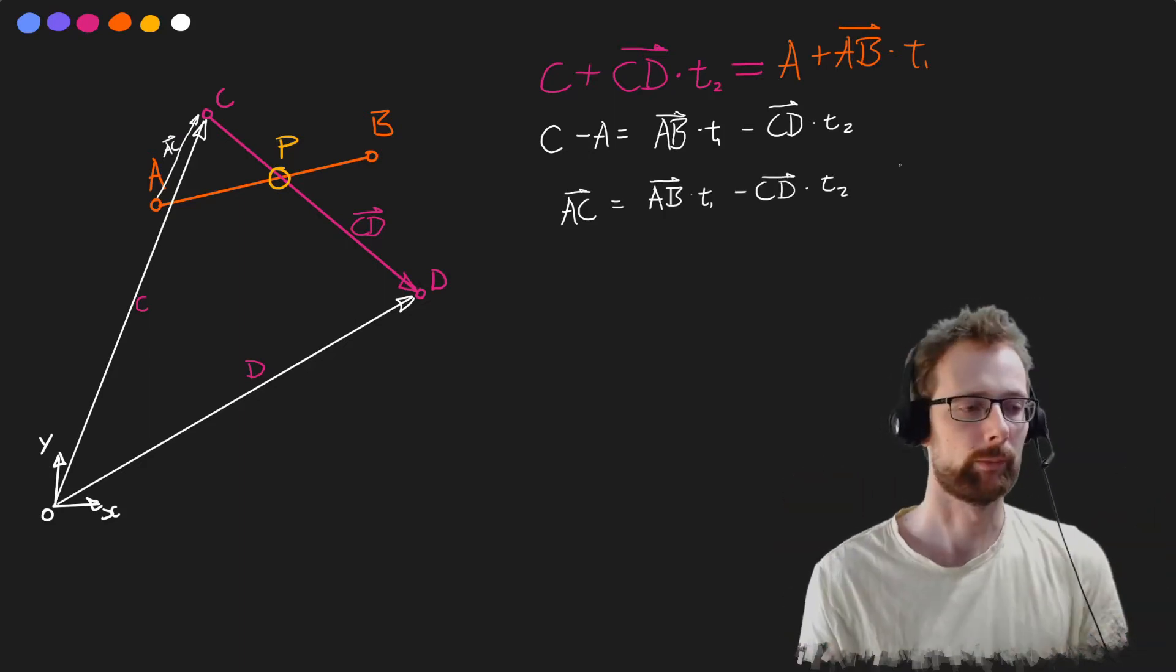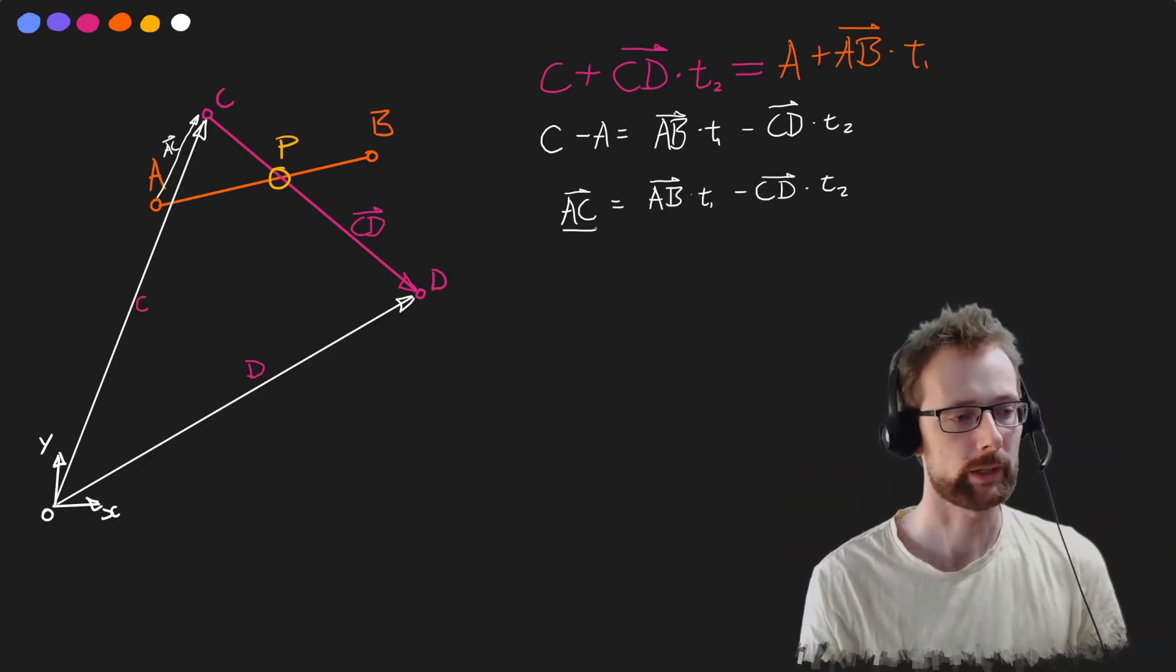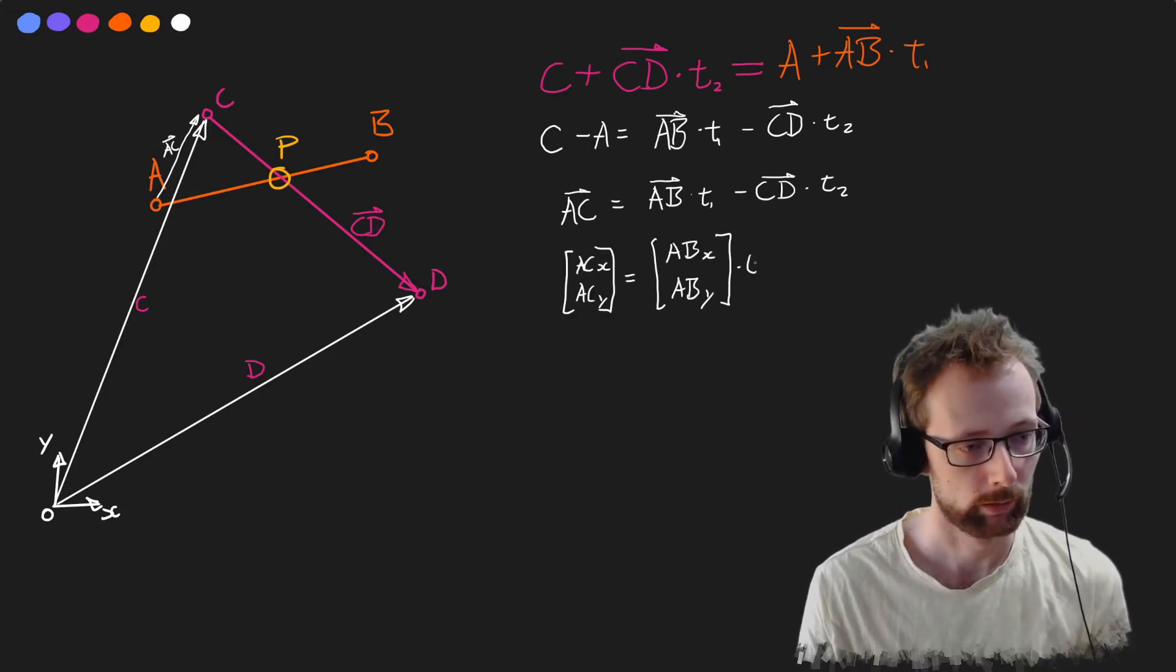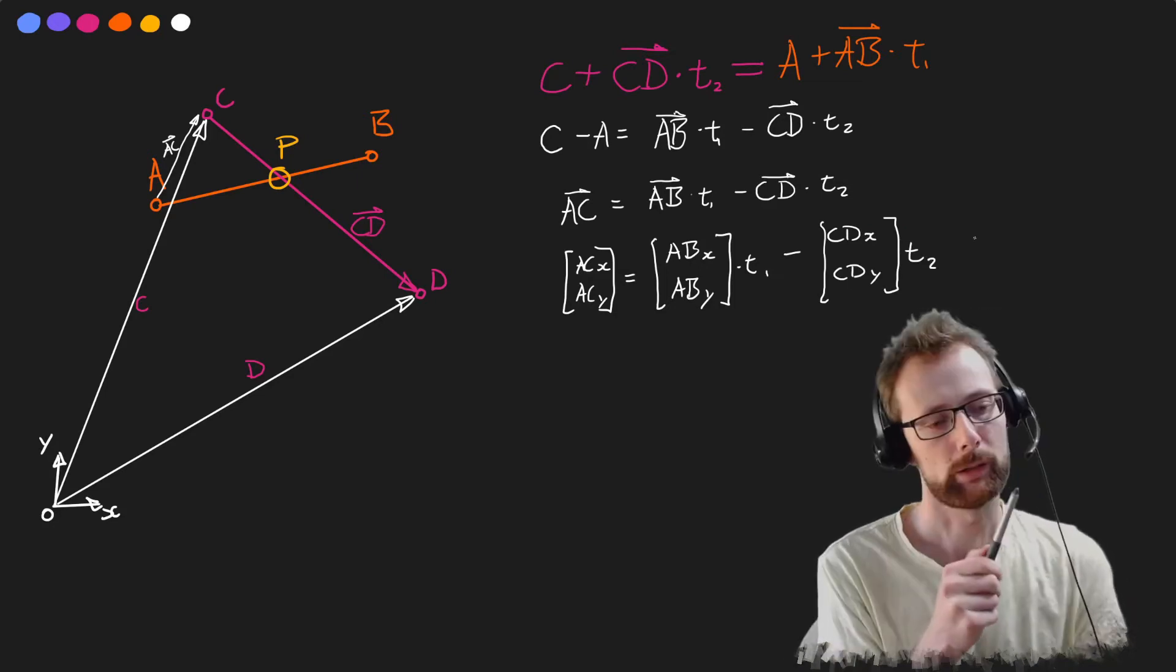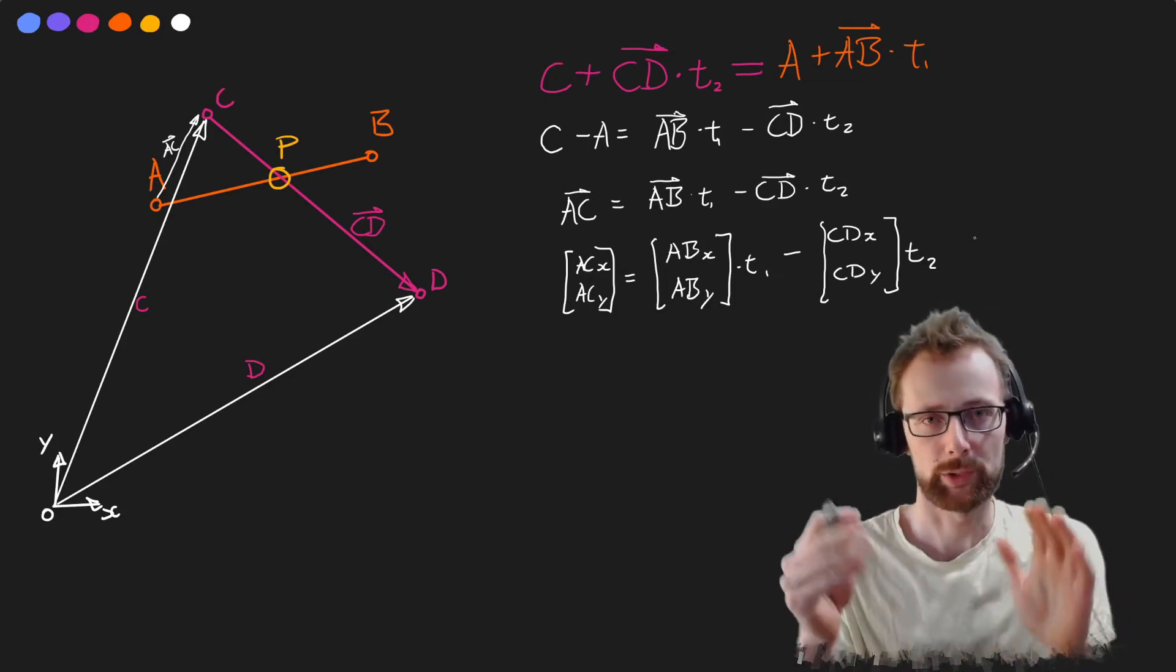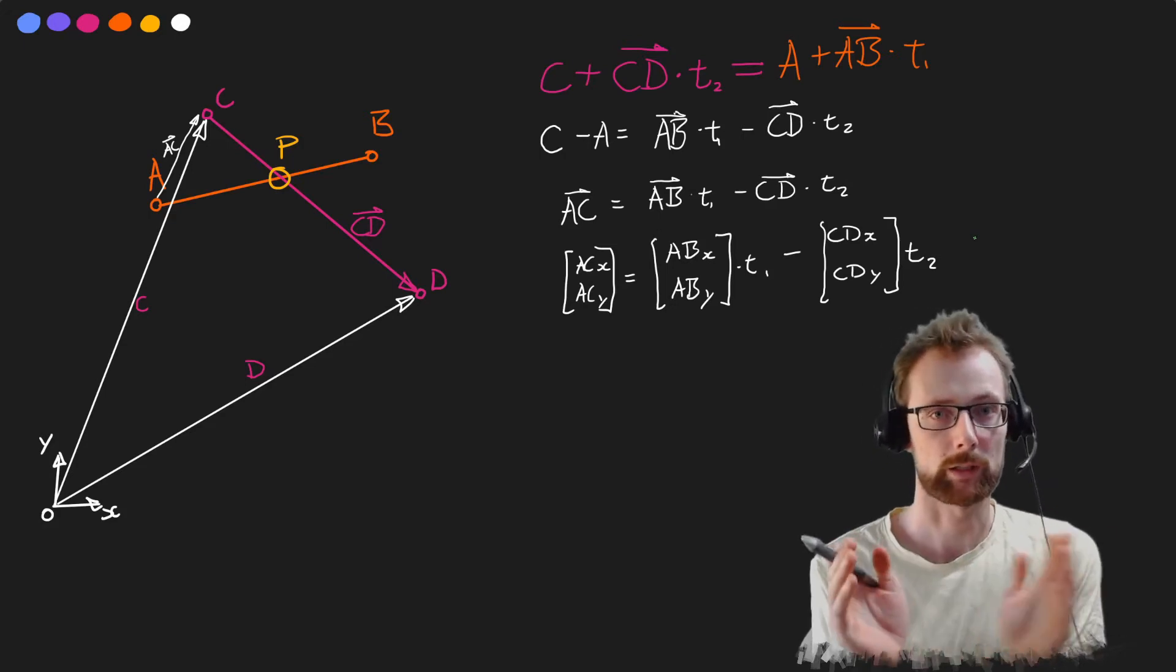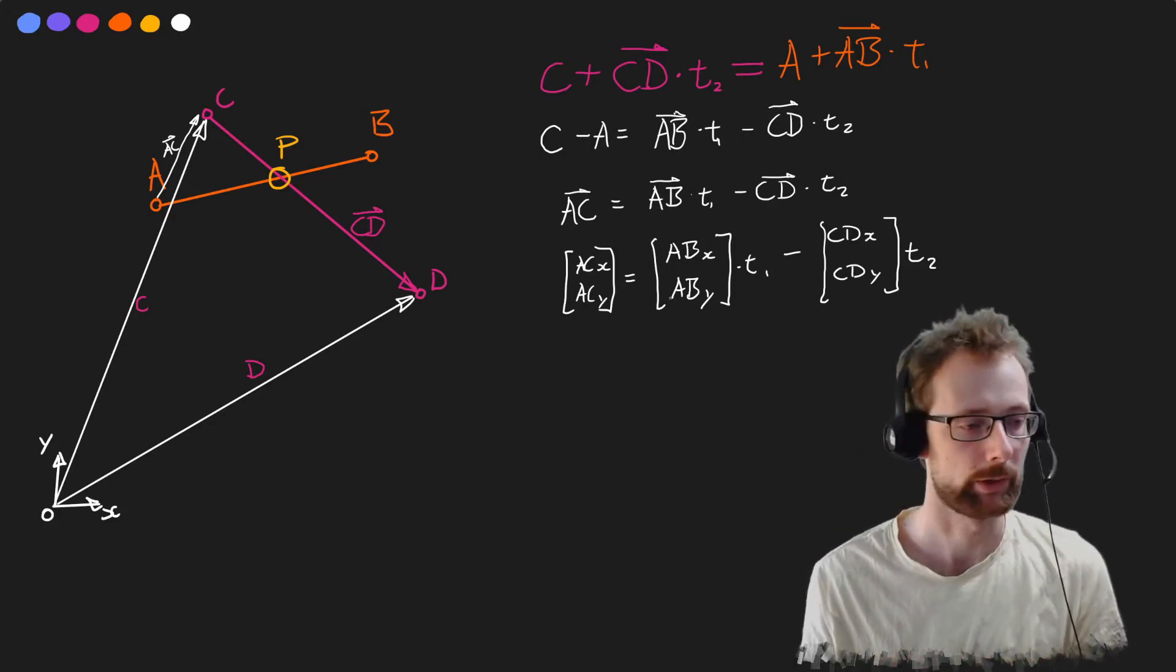Now we have a bit of a problem because we have a vector, a vector, a scalar, a vector, and another scalar. t1 and t2 can actually be grouped into a column vector, and ab and cd can be grouped together into a matrix to get the same equation.